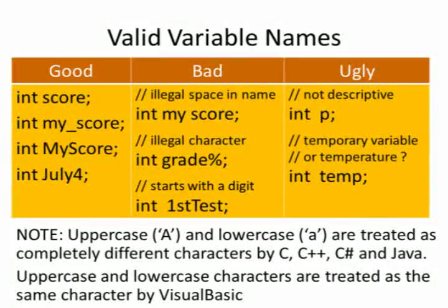Here's a chart with sample valid variable names — the good, the bad, and the ugly. For example: int score, int my_score, int MyScore. int July4 is valid, but you can't do 4July.